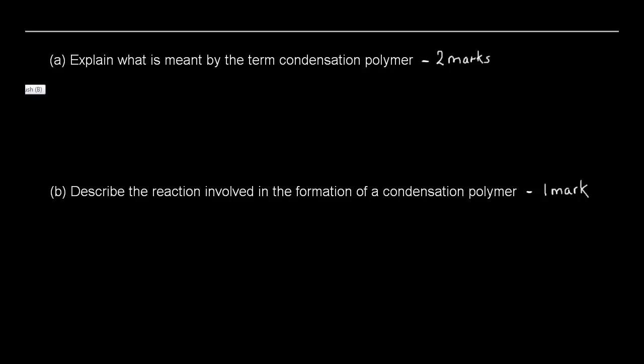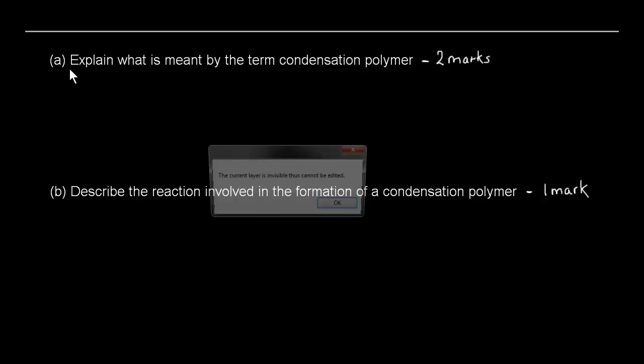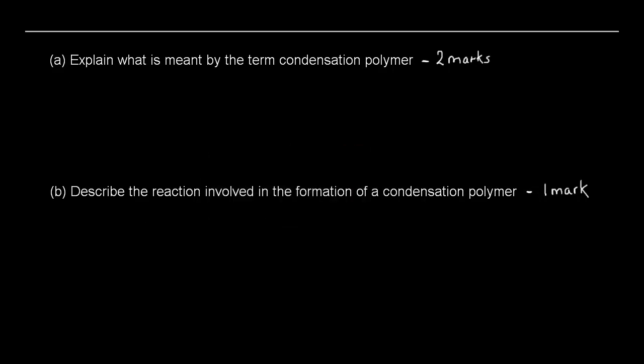Alright, so for the very first one, for part A, it's important to look at the verb. The verb says explain. What is meant by explain is you need not just be able to identify. Identify would be what is a condensation polymer. Cellulose is a condensation polymer. Explain means you need to be able to describe and give more detail in terms of what a condensation polymer. Explain means what is it and give some detail. It's not supposed to be just identifying, it's more than that.